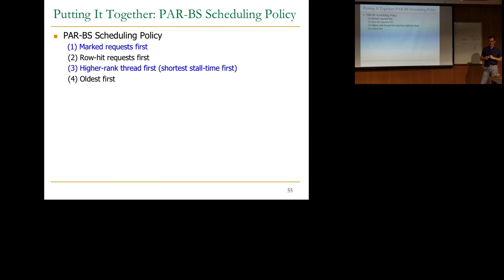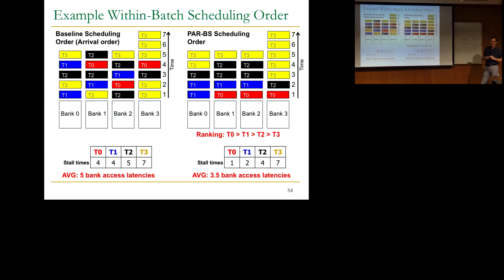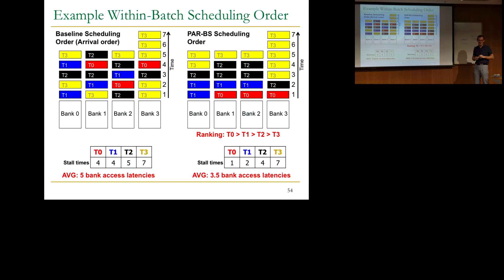There may be stuff that's not marked in a bank — those get serviced, and they become marked in the next batch. You could optimize that part also, and we've looked at how to optimize it, but it doesn't buy you that much. Basically, once the marked stuff is done, unmarked requests get serviced, and then a new batch forms. We've also looked at variants with multiple batch priority levels — oldest batch, second oldest, third oldest, and unmarked — but the single-bit scheme performs well and keeps complexity low.